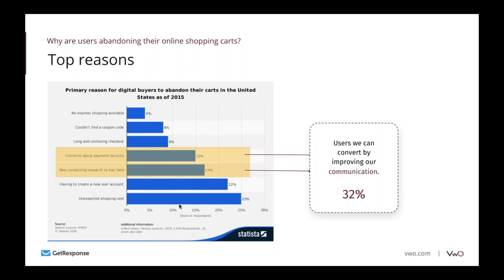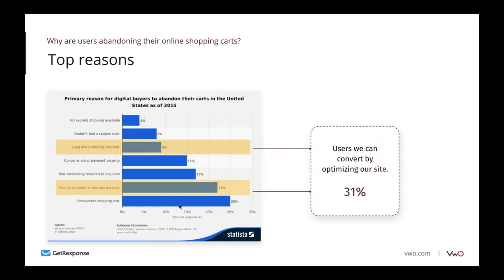When it comes to people researching to buy later, why not convince them to leave their email address and add themselves to a wish list if the product was unavailable? Then there's another group — around 31% — where the checkout is long and confusing or they have to create a new user account. Interestingly, quite a few people think they must create an account because your communication wasn't clear. So improve your communication and let users know they don't have to do it.